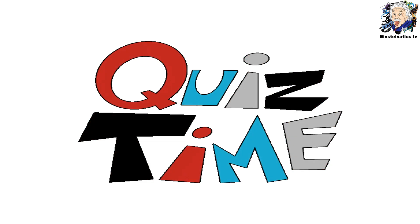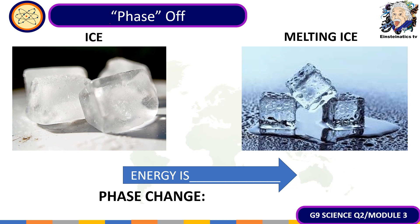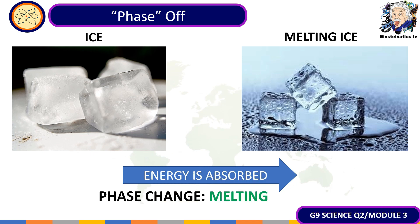Let's check your understanding with a short quiz called Phase-off. You need to identify whether energy is absorbed or taken away during each process, and identify the type of phase change. First example: ice turning into melting ice. The correct answer is that energy is absorbed, and the phase change is known as melting.